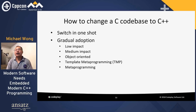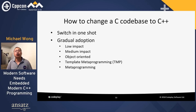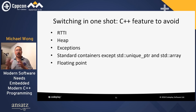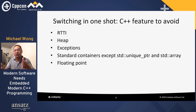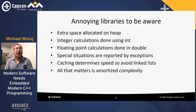How do you change a C code base to C++? There are two ways: switching in one shot, or gradual adoption. If you switch in one shot, there are C++ features you probably want to avoid: RTTI, use of the heap, exceptions, standard containers except unique_array, unique_pointer, standard array, and floating point. Things in the C++ library to be aware of: extra space allocated on the heap, integer calculations using int, floating point calculations in double, special situations reported by exceptions, and caching determining speed.